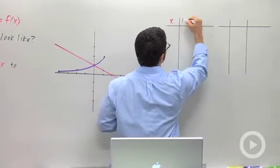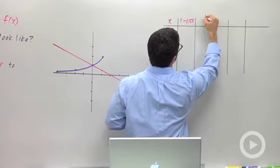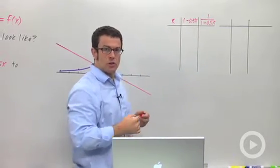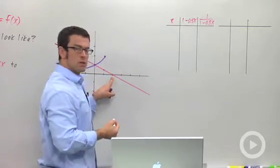I've got x, 1 minus 0.5x, and 1 over 1 minus 0.5x. Let's let x get closer and closer to 2 and see what happens as we get close to this point.